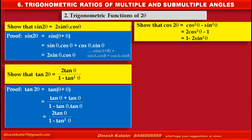So that cos 2 theta is equal to cos square theta minus sin square theta, or it is equal to 2 cos square theta minus 1, or it is equal to 1 minus 2 sine square theta.